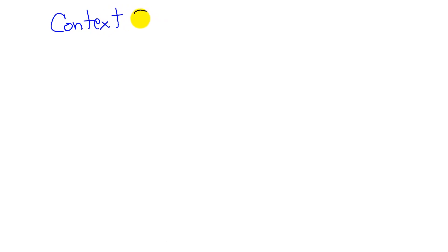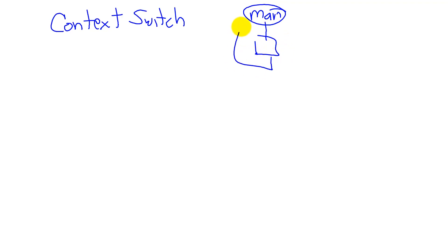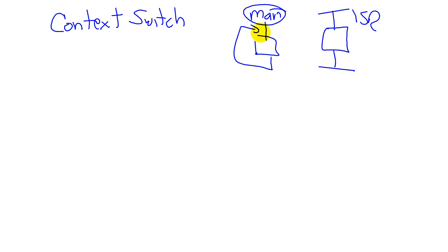Next, let's look at the context switch. The trigger has happened and the context switch is the process by switching from the main program into the interrupt service routine. So we're executing here in the main program, the trigger happens and we're going to switch over to the interrupt service routine.